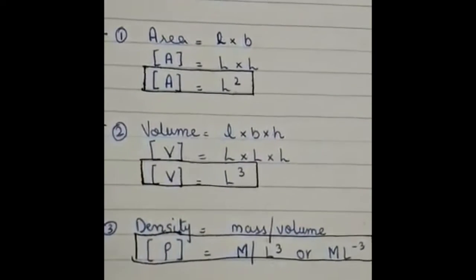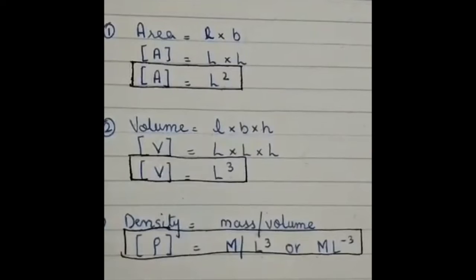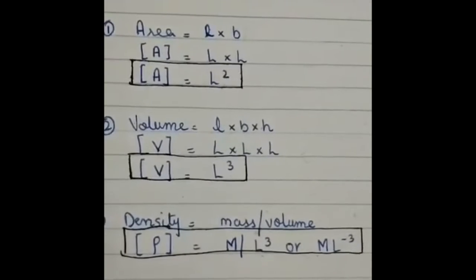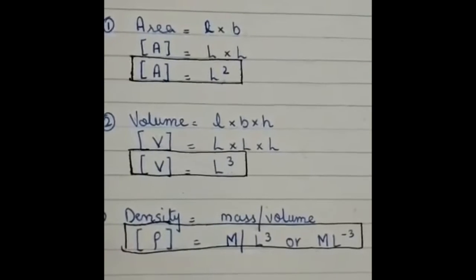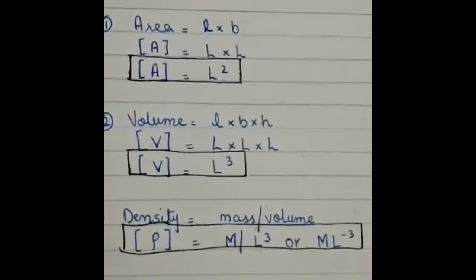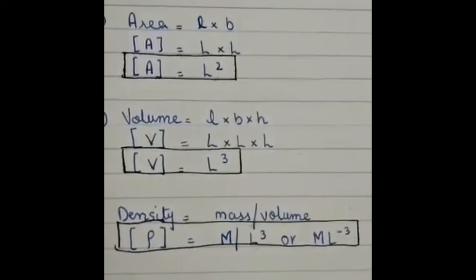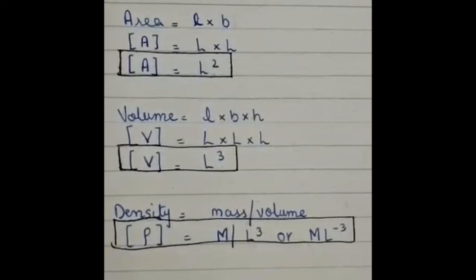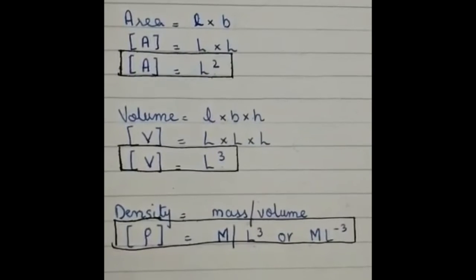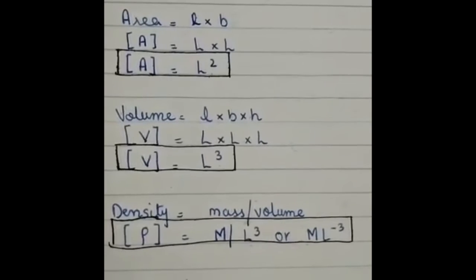Then volume which is equal to length into breadth into height. So length has a dimension L, breadth has a dimension L and height has a dimension L, so volume has a dimension L cube. Now density which is mass per unit volume has a dimension capital M per unit L cube.